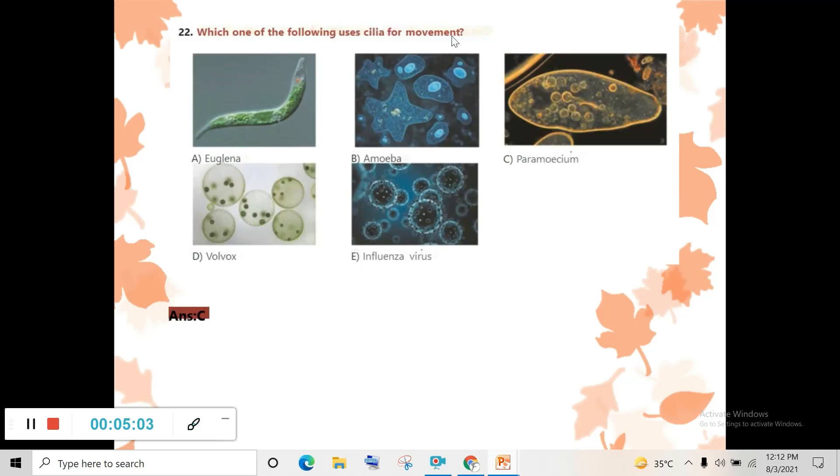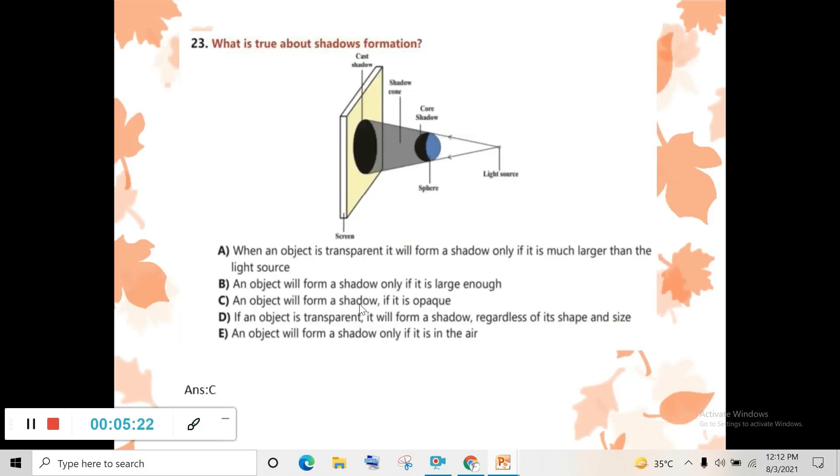Read the question and find the answer. Which one of the following uses cilia for moving? Euglena? No. Amoeba? No. Paramecium? Yes. Volvox? No. Influenza virus? No. Answer C is correct.